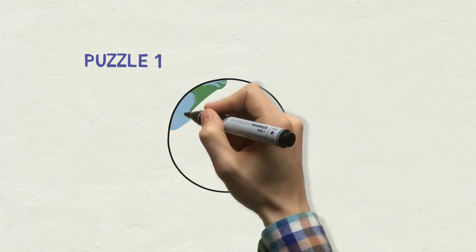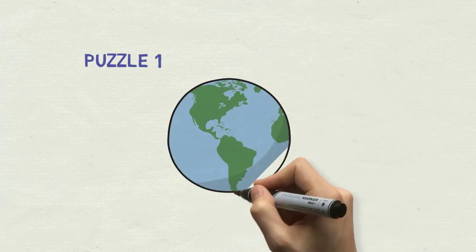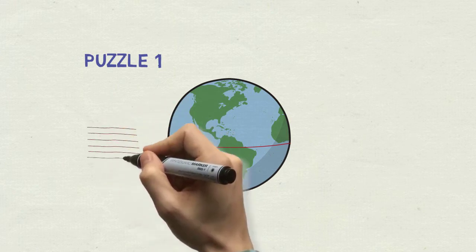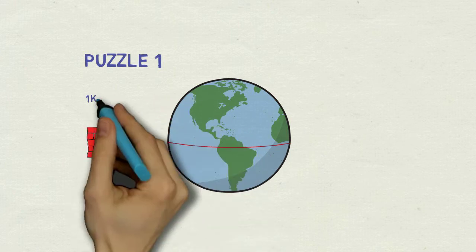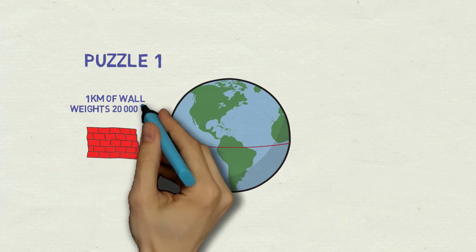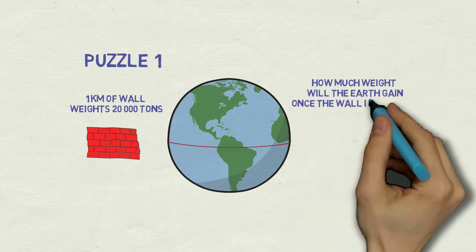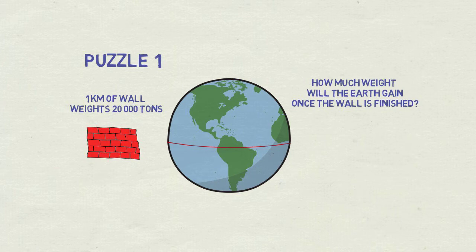First puzzle I saw years ago as a child while reading Donald Duck comics. Let's imagine that along the whole equator, including water somehow, a wall is being built. Each kilometer of that wall weighs 20,000 tons. And the question is – how much weight will the Earth gain once the wall is finished? Now is the time to pause and think.